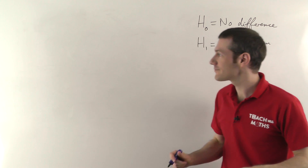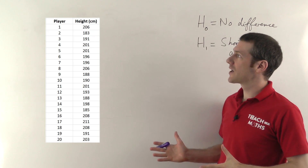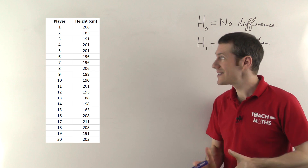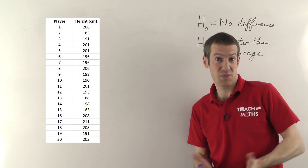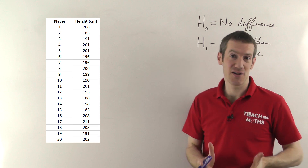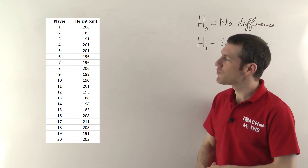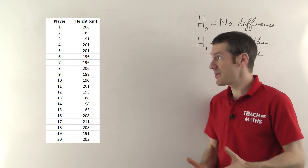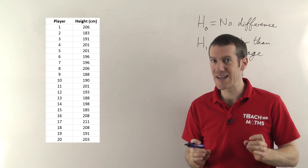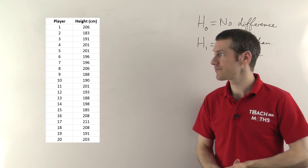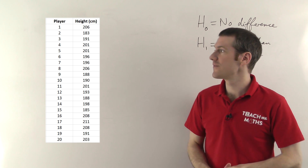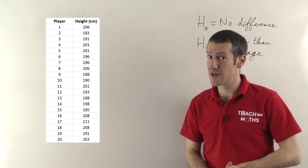Let's have a look at the data. Here are the heights in centimeters of 20 different players — these are the 20 players you've been using on your team. You can see there is a spread of heights and they're basketball players so they're pretty tall, but you're thinking maybe they're shorter than the average basketball player. So we're going to do a t-test on this data to figure out if they really are shorter than average.